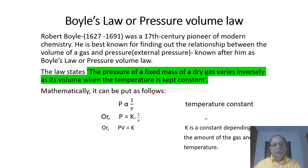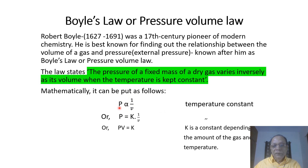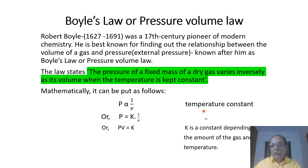The law states: the pressure of a fixed mass of a dry gas varies inversely as its volume when the temperature is kept constant. There are three parameters which describe a gas completely: pressure, volume, and temperature. To see the relation between pressure and volume, Robert Boyle kept temperature constant.